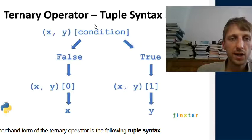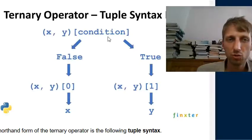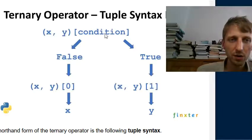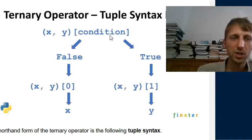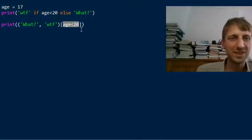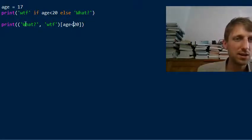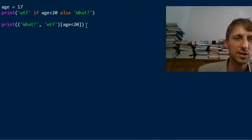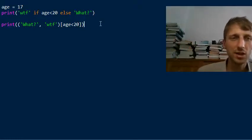In the tuple syntax hack, we have X, Y, and the condition. The false value is automatically represented by integer zero, and the true value by integer one. So if the condition is true, we return the second tuple value; if false, we return the first. This is a smart little trick that simulates the behavior of the ternary operator with a really concise notation.